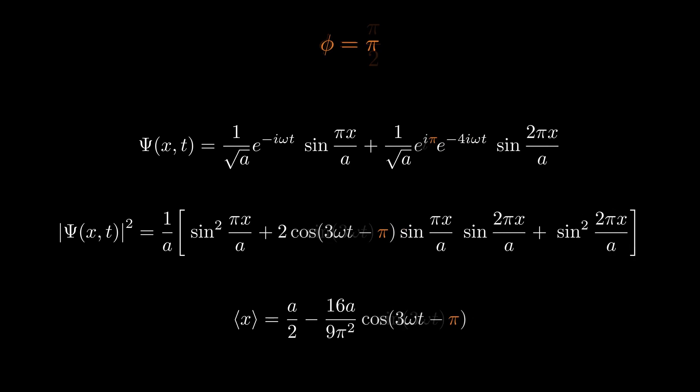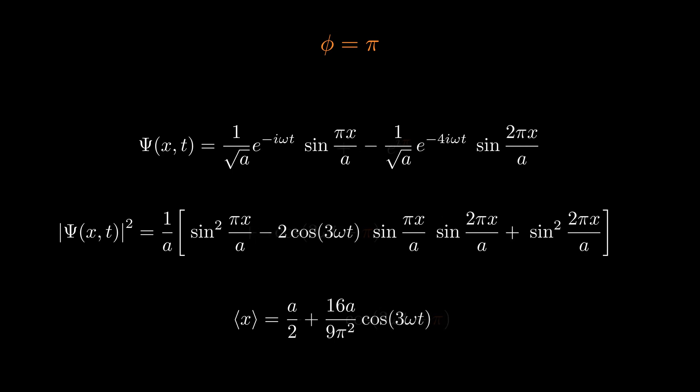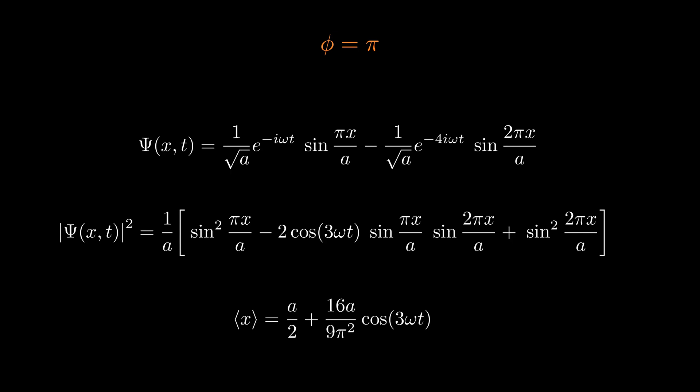Now let's set phi to π and see what happens. With this change, the phase shift in the probability density and expectation value of x is now different. In the expectation value, the cosine term has effectively shifted by π, meaning the oscillations are now completely out of phase compared to the original case. Instead of reaching a maximum at a given time, the expectation value now reaches its minimum and vice versa — a complete inversion of the oscillatory motion. This shows that the relative phase between wave function components controls the direction of oscillation in time, and by adjusting phi we can shift or even invert these oscillations. This highlights the physical significance of the relative phase: it directly influences measurable quantities, even though the overall phase of the wave function itself does not.